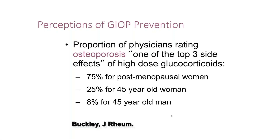A study by Lenore Buckley asked physicians the top three side effects of glucocorticoids. Interestingly, 75% of them thought osteoporosis was a big problem in postmenopausal women on steroids, but only 25% thought it was a problem in premenopausal women or 45-year-old men. This study continues to be replicated with similar results — we haven't seemed to train physicians that everyone on steroids is at risk of bone loss and fracture.